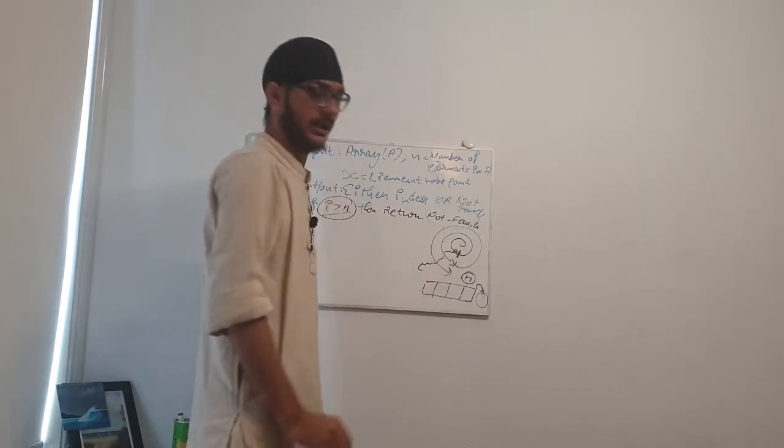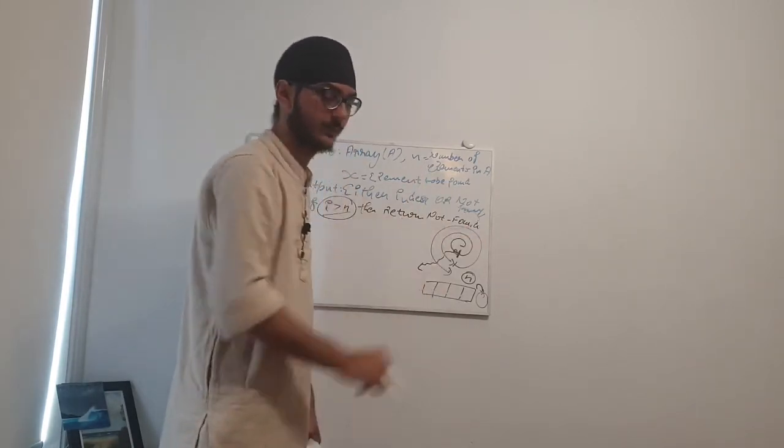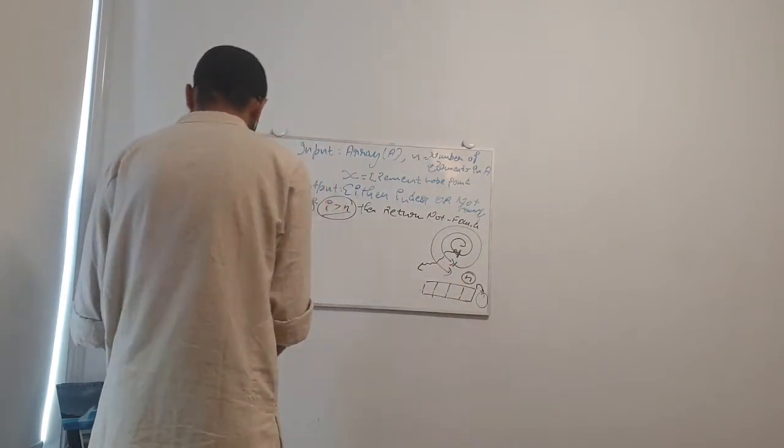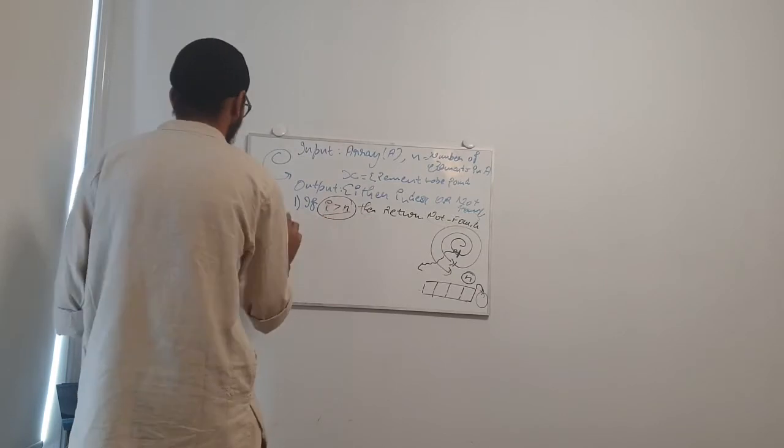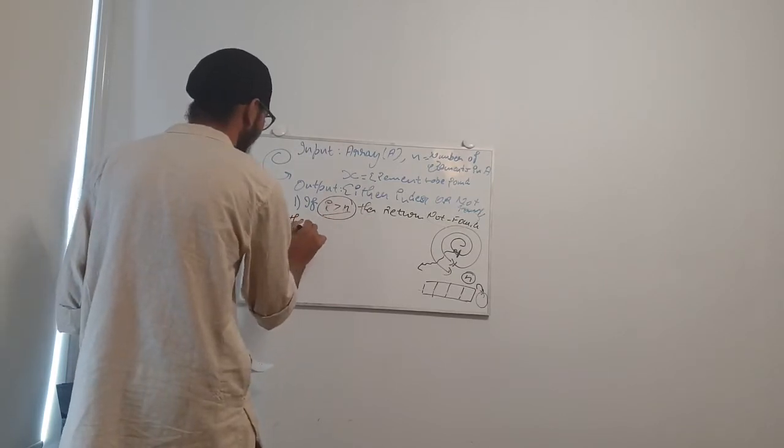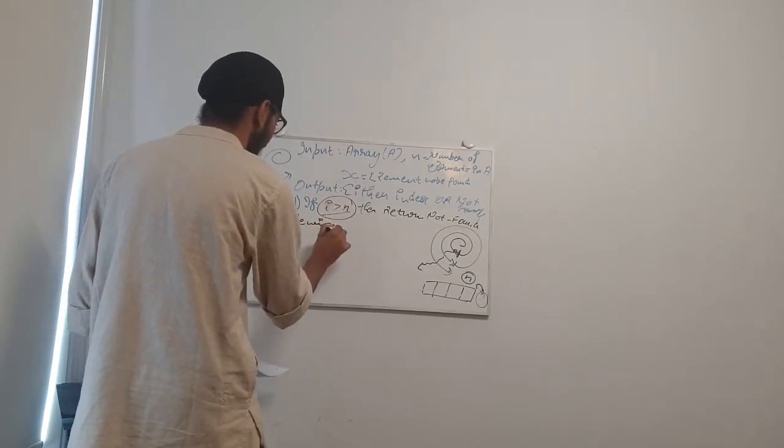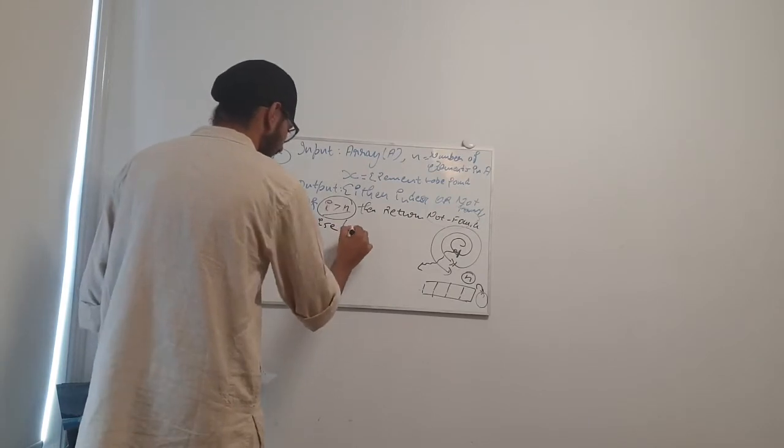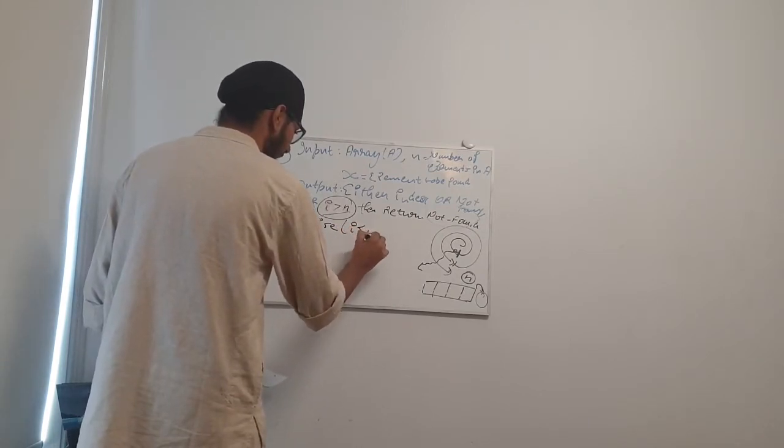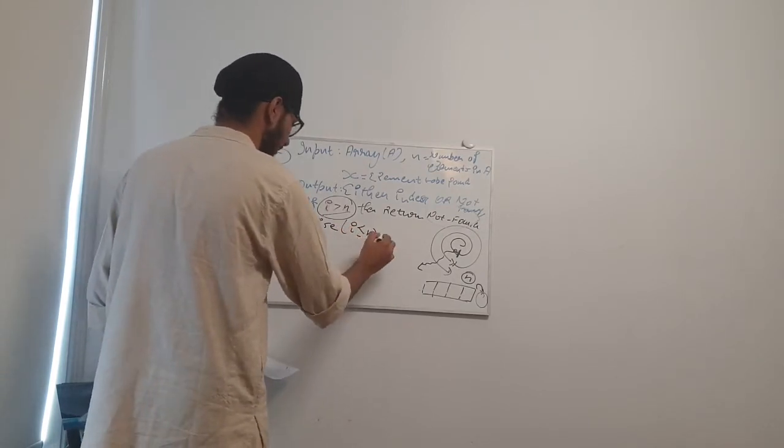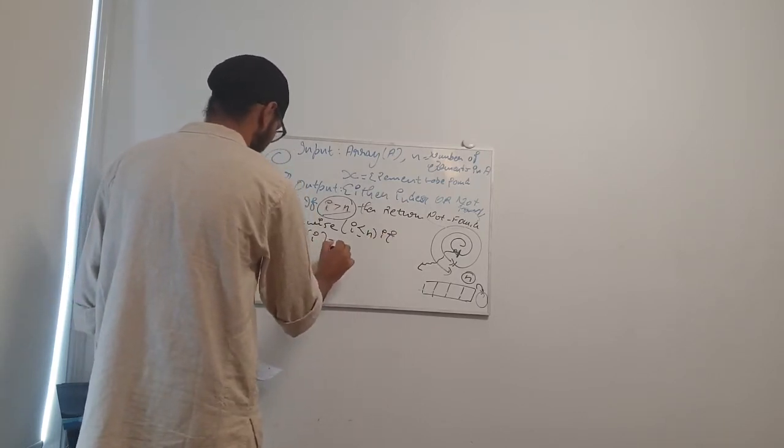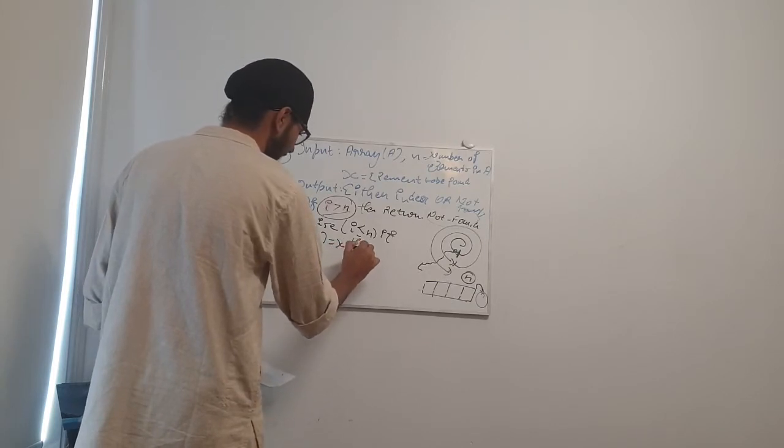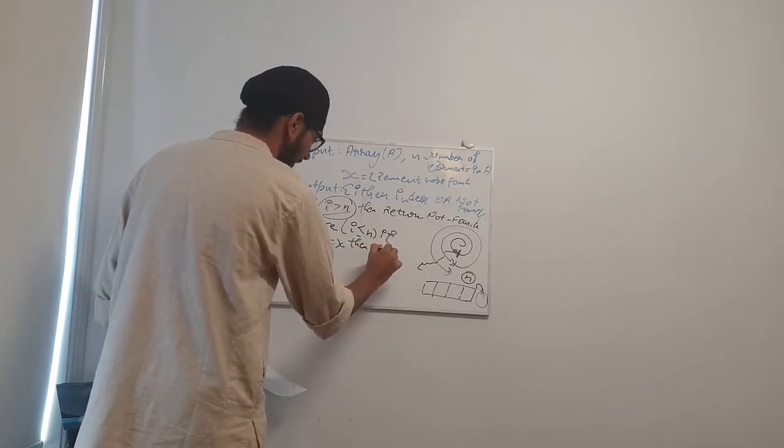Next step, step two: otherwise, otherwise means else. Otherwise, if I is less than or equal to N, if A of I equals X, then return I.